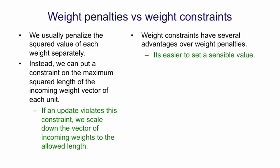That's because logistic units have a natural scale to them so we know what a weight of one means. Using weight constraints also prevents hidden units getting stuck near zero with all their weights being tiny and not doing anything useful. Because when all their weights are tiny there's no constraint on the weight so there's nothing preventing them from growing.